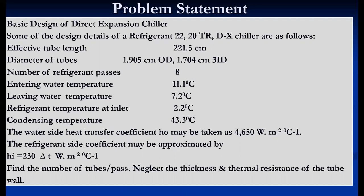The entering water temperature is 11.1°C, leaving water temperature is 7.2°C, refrigerant temperature at inlet is 2.2°C — which is the evaporating temperature. Since the refrigerant temperature at the outlet is not given, we assume the state is saturated at the outlet. Condensing temperature is 43.3°C. Water side heat transfer coefficient H_o and inside coefficient H_i are given. We need to find the number of tubes per pass, assuming tube wall thermal resistance is negligible.